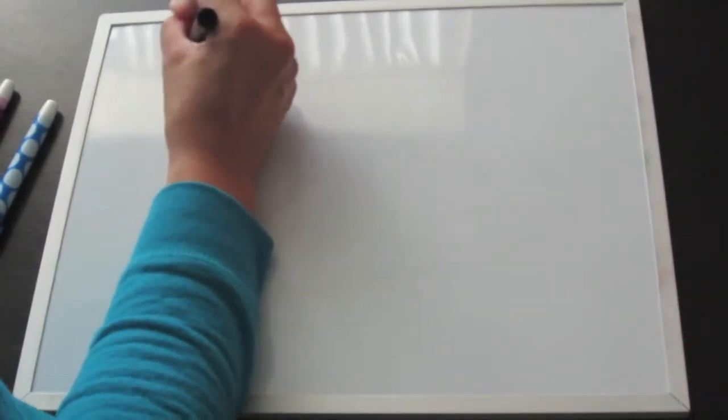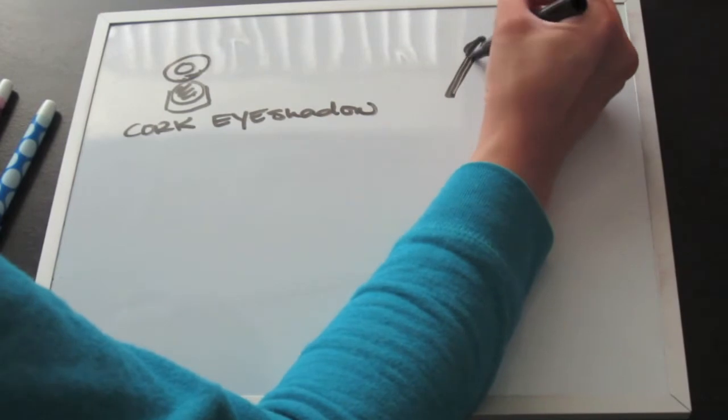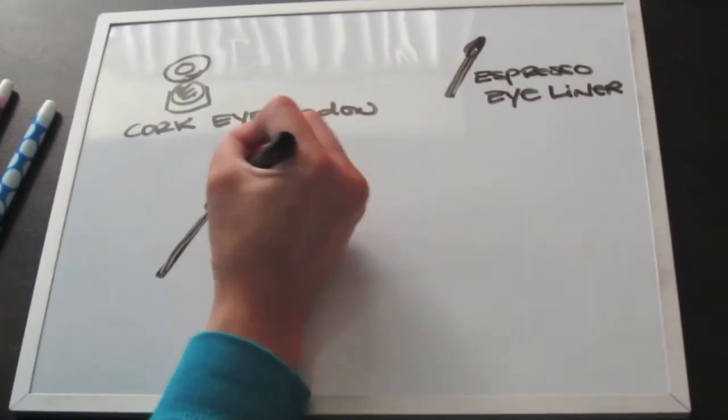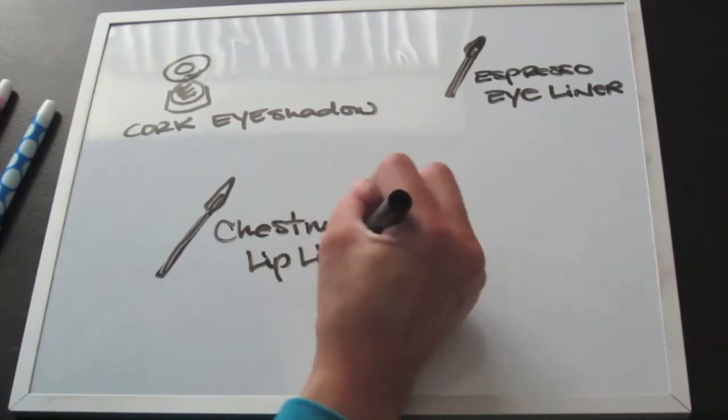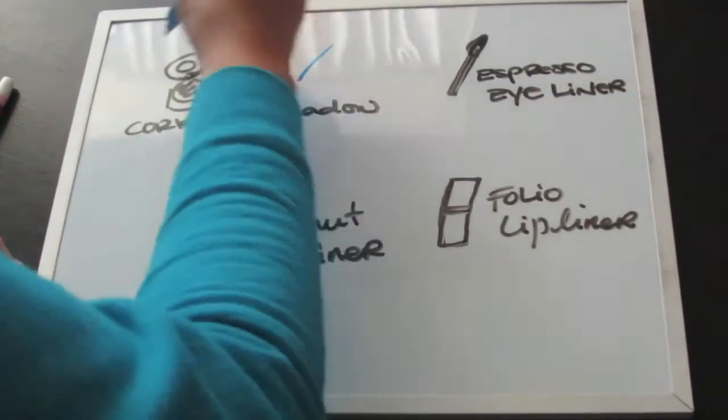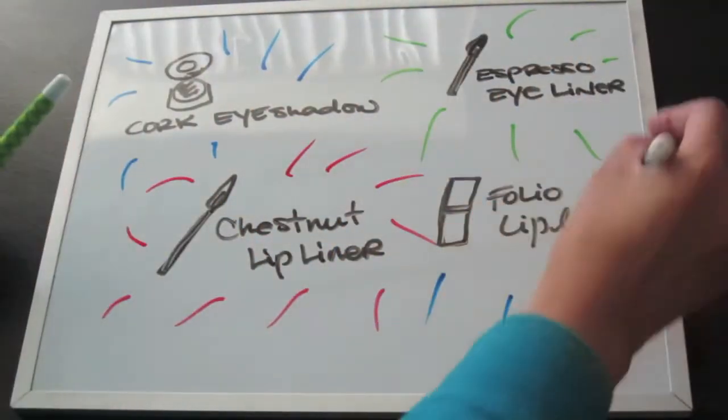I picked out cork eyeshadow, espresso eyeliner, chestnut lip liner, and folio lipstick. I was so happy that I got to use this MAC stuff because all the other girls in my school were only using drugstore stuff.